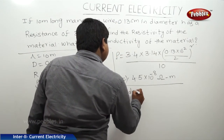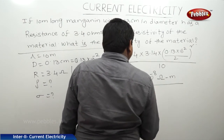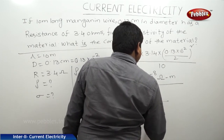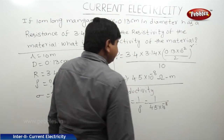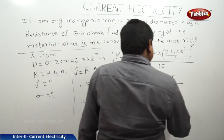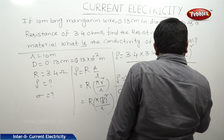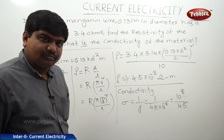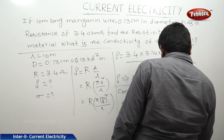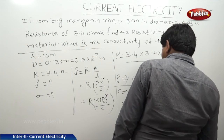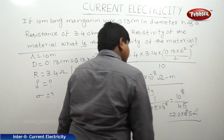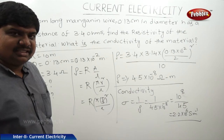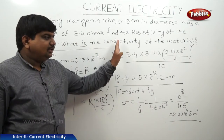For conductivity, sigma equals 1 divided by rho. It is defined as 1 divided by 4.5 into 10 to the power of minus 8. The minus 8 goes to the numerator, giving 10 to the power of plus 8 divided by 4.5, which equals 2.2 into 10 to the power of 6 siemen per meter. Siemen is the SI unit of conductivity, just as ohm meter is the unit for resistivity.